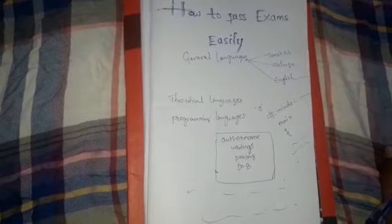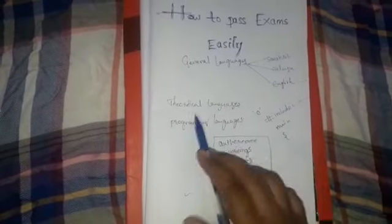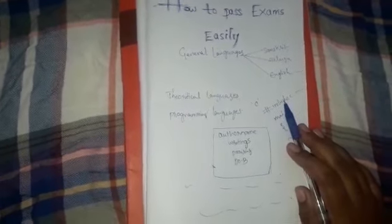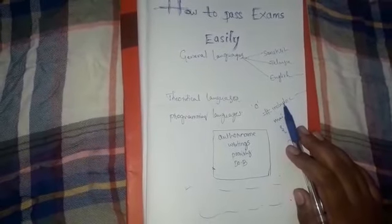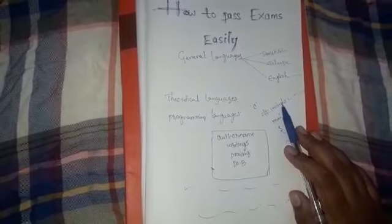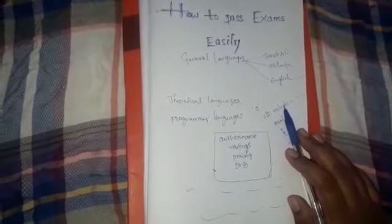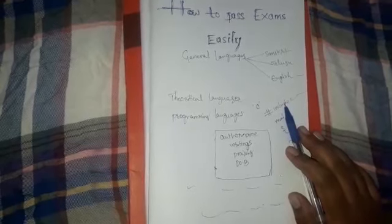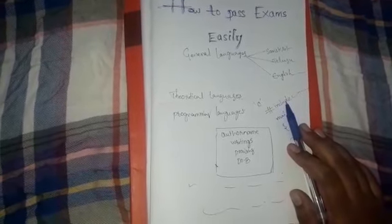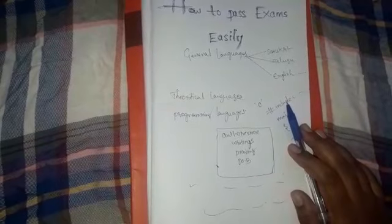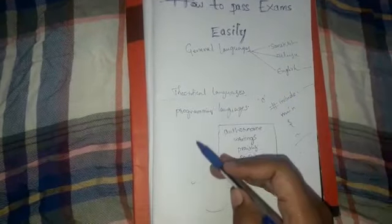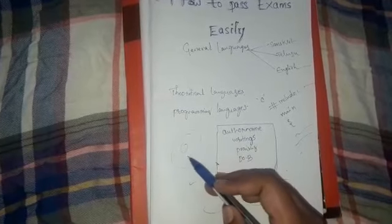Finally, theoretical subjects - like IPR, MAFA, and core subjects like software project management, software engineering, software testing methodologies. In these we have to write a lot of theory, but we have to write in diagrammatic form. Diagrammatic form means using tree diagrams or other diagrams.